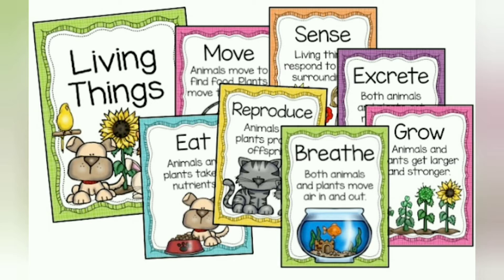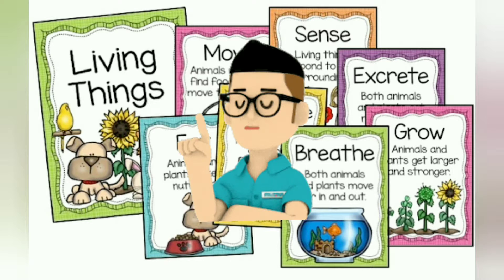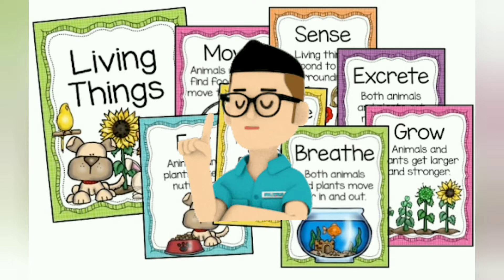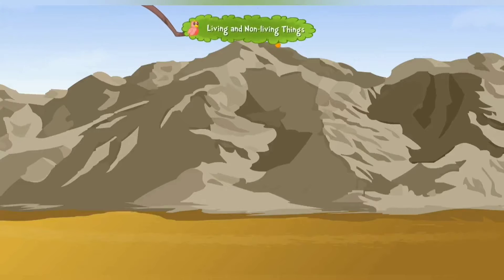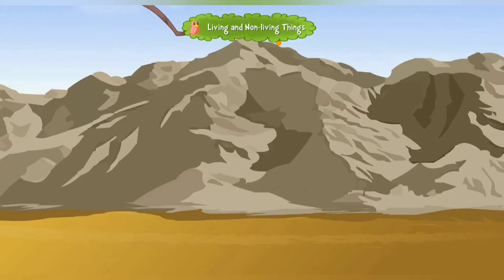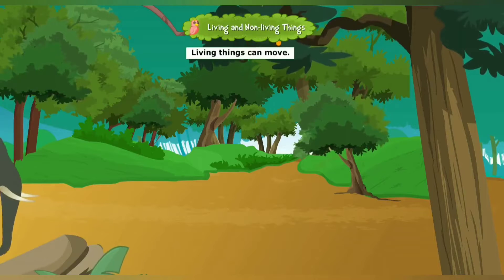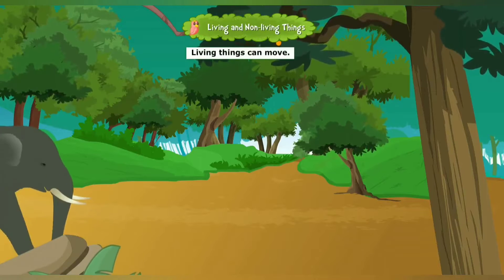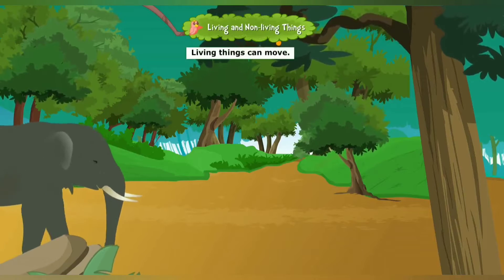Living things can eat, move, sense, reproduce, breathe, grow, and excrete, but non-living things cannot do any of it. Now look at this mountain — it cannot move, it is a natural non-living thing. But this elephant moves, and it is a living thing.